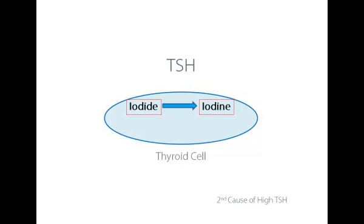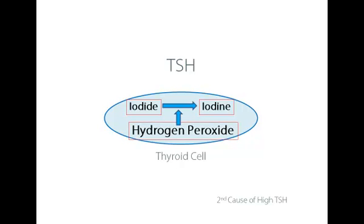Let's look at thyroid stimulating hormone and its action upon thyroid cells. How does TSH stimulate? Remember that it's iodide that's absorbed into the iodide traps, ready to be converted into iodine when the thyroid cell is stimulated by TSH. Hydrogen peroxide produced by the thyroid cell is what converts iodide to iodine, and it's TSH that stimulates the thyroid cell to increase its production of hydrogen peroxide.